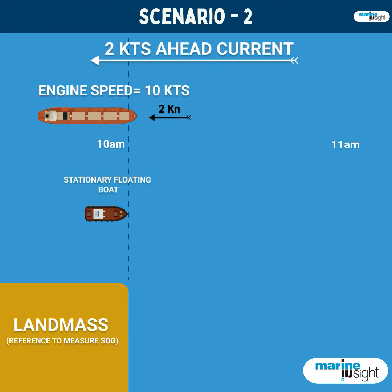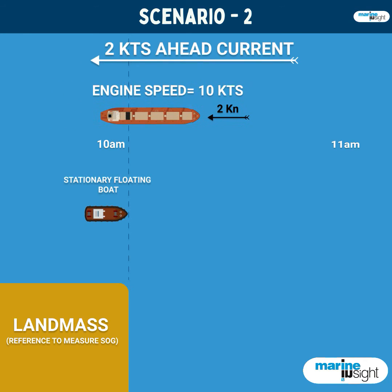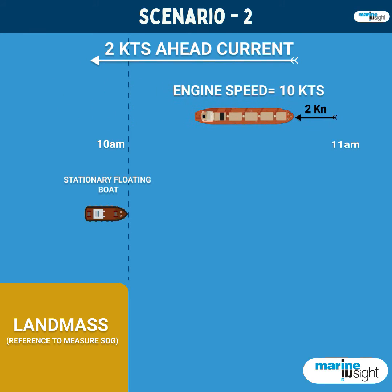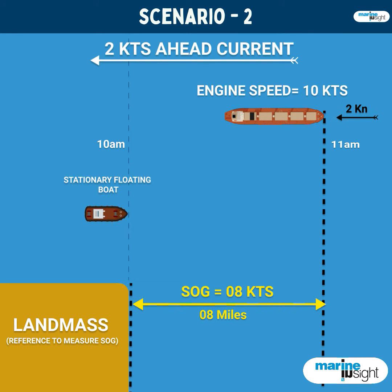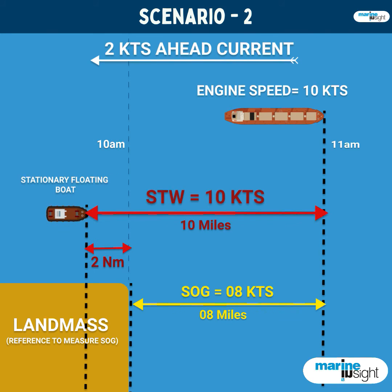Now let's assume there is a forward current of 2 knots. After one hour, the ship would have travelled a distance of 8 miles with respect to land due to against current, thereby making speed over ground as 8 knots. Because of the ahead current, the boat would have moved 2 nautical miles away from the ship, thereby making speed through water as 10 knots.